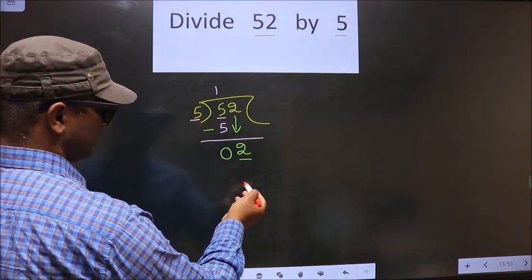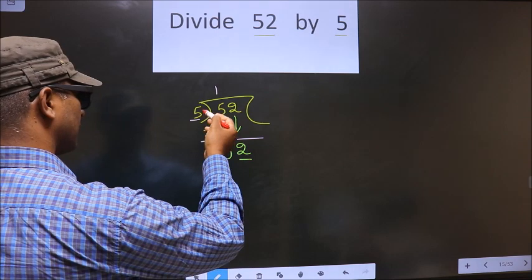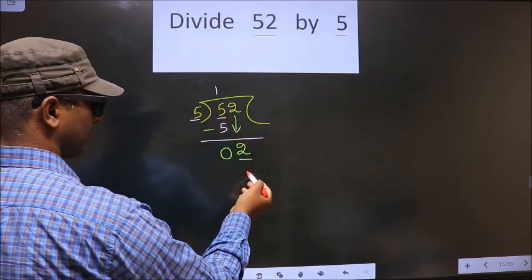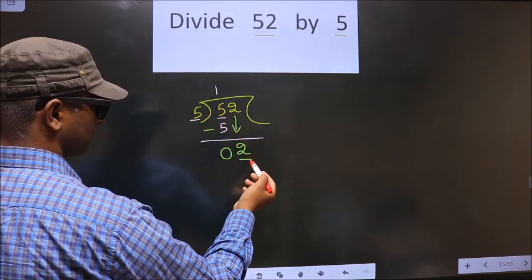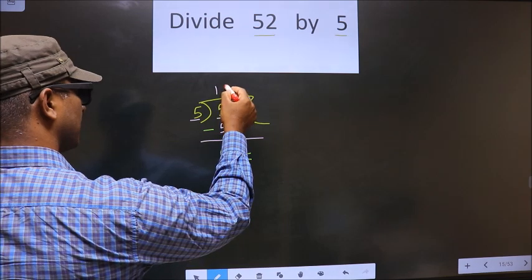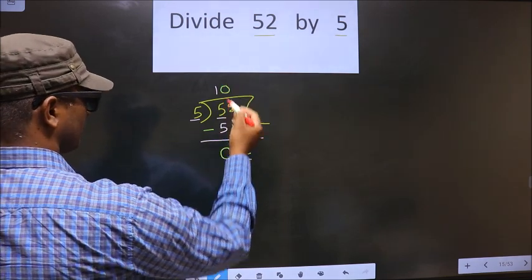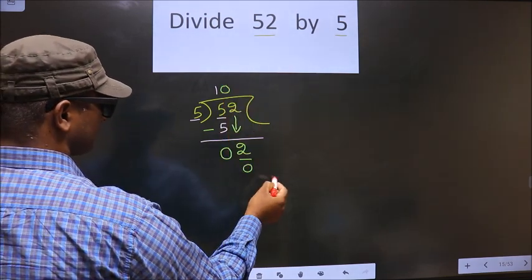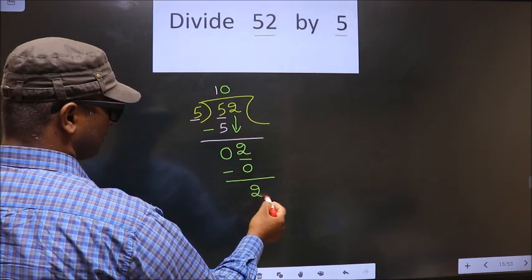To get a number here. If you multiply by 1, you get 5. 5 is larger than 2. So you should multiply by 0. So 5 into 0 is 0. Now you subtract. Now you get 2.